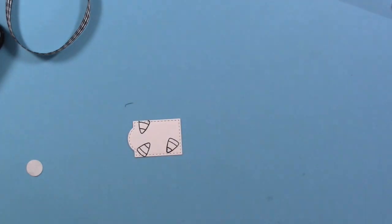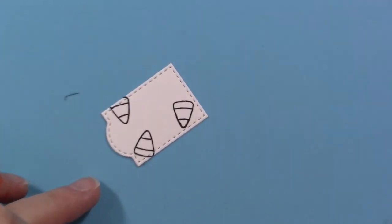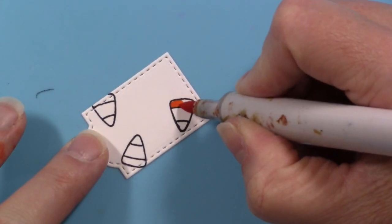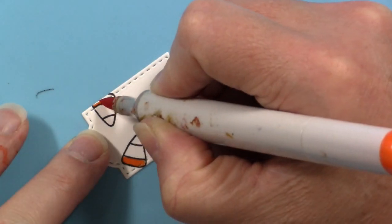It's very simple coloring as they are tiny. I'm just going to go in with a YR07 and color in the bottom part of that little candy corn. Then I'll be going in with a Y13 and coloring in the yellow portion there.